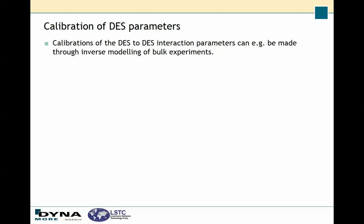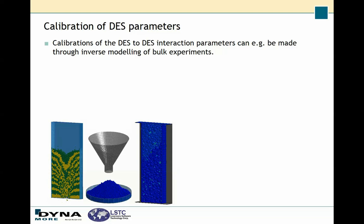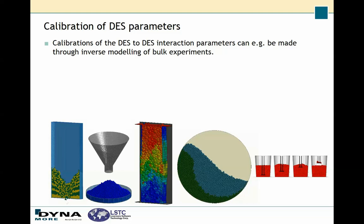In order to get the correct bulk behavior you are looking for, you need to perform some calibrations, for instance by inverse modeling of bulk experiments. There are a few common bulk experiments: tests of flow where you measure the pile underneath a funnel to get the angle of repose, a compression test, a drum mixer test, or a pullout test. These are just a few examples of what can be done to calibrate your parameters.